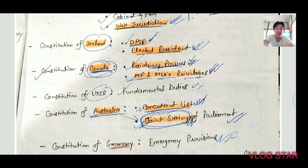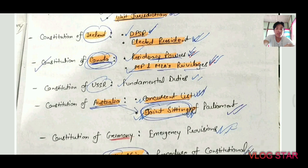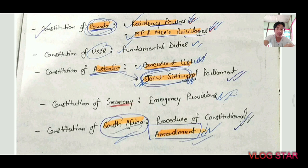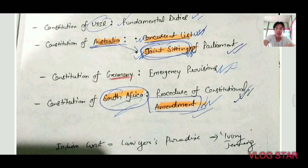From the Constitution of Canada came the residuary powers that remain with the Centre. From the USSR came Fundamental Duties. From the Constitution of Australia came the Concurrent List — Union List, State List, and Concurrent List — and the Joint Sitting of Parliament. From Germany came the Emergency Provisions. From South Africa came the procedure of Constitutional Amendment.